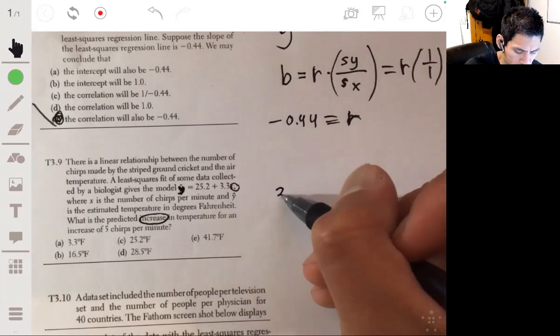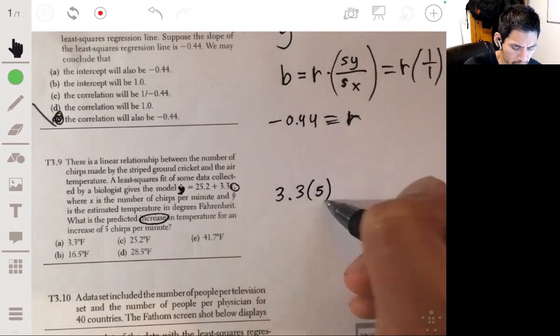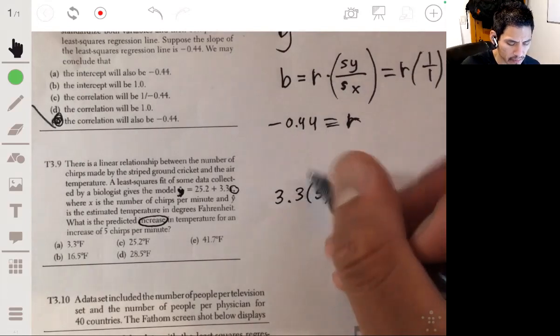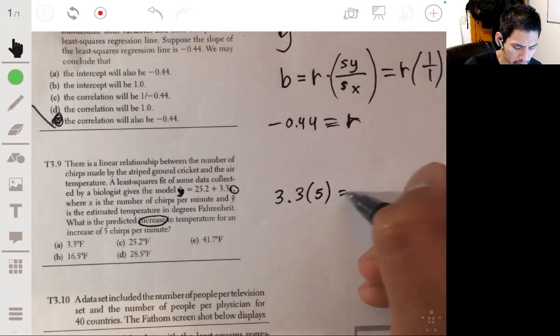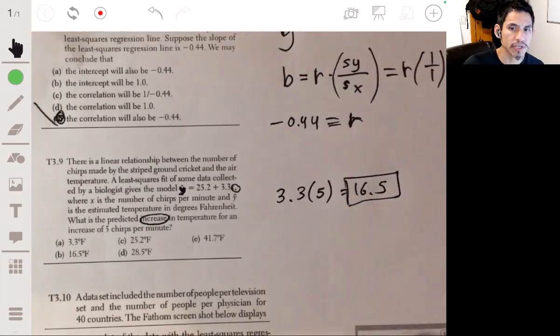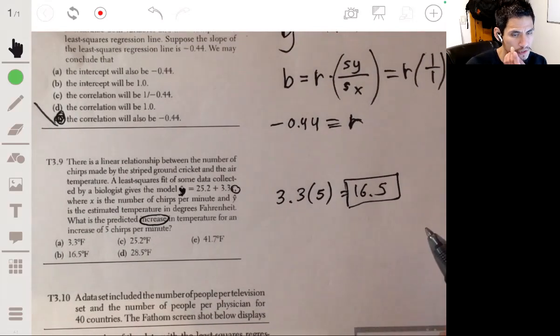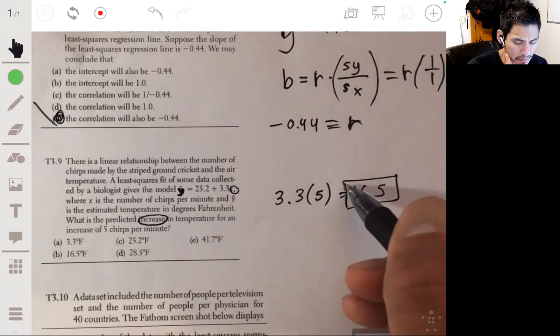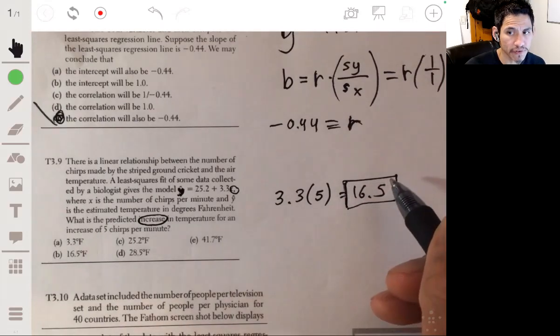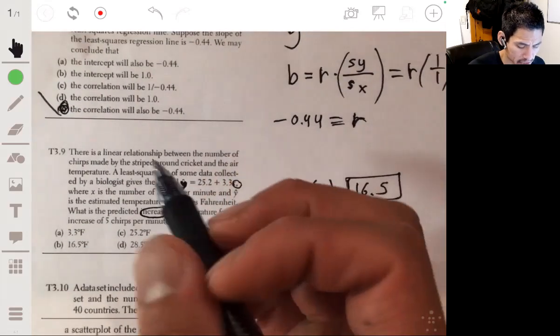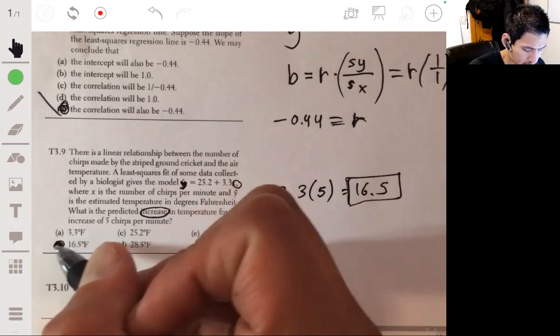So to find that you just do 3.3 times 5, which is 16.5. So it would increase by 16.5 degrees Fahrenheit. Now, it doesn't mean that the temperature would be 16.5, it just means it would increase by 16.5 degrees Fahrenheit. The answer is B.